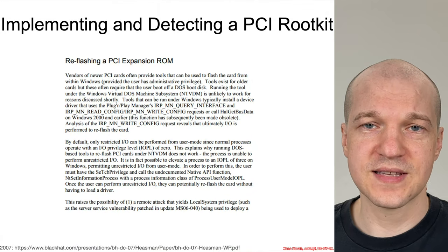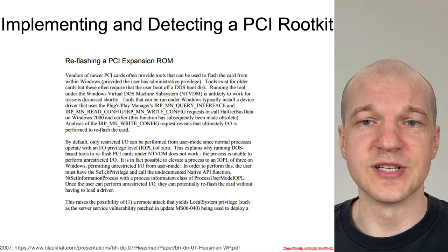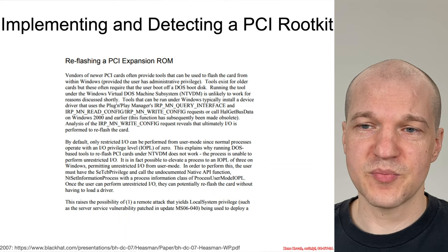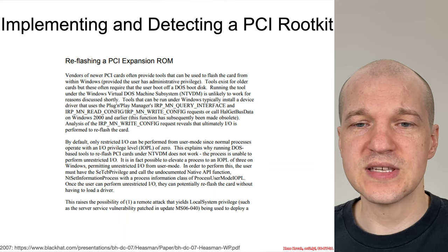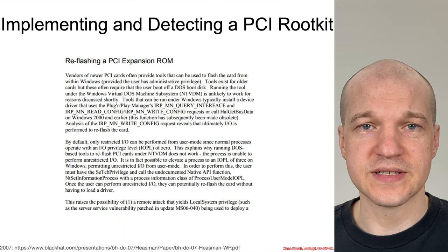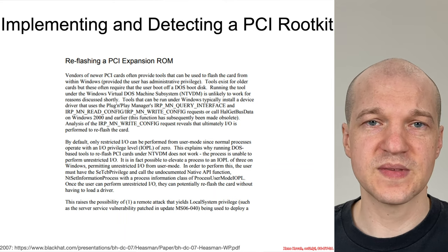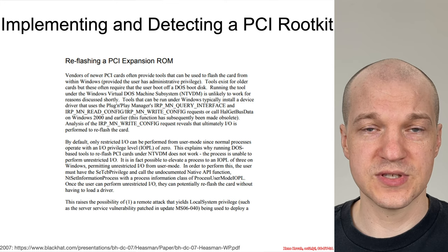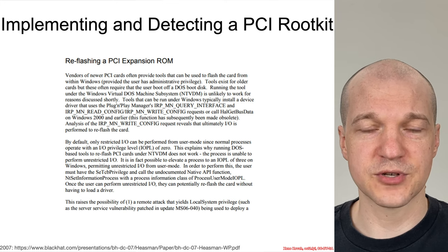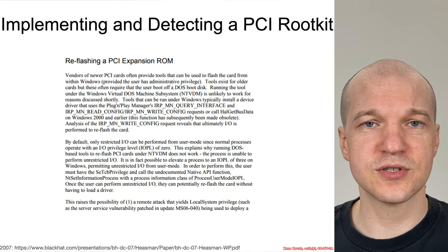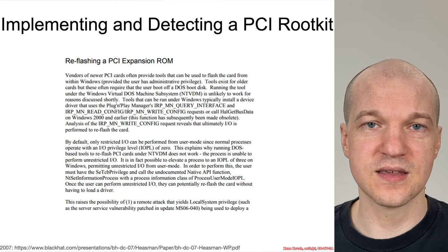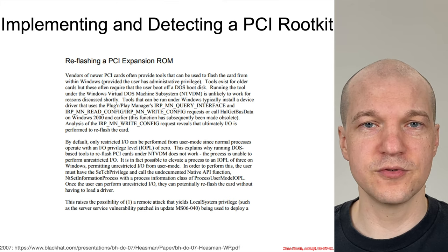In 2007, John Heisman presented 'Implementing and Detecting a PCI Rootkit.' This talk was basically about using Option-ROMs in order to infect the kernel with a rootkit.